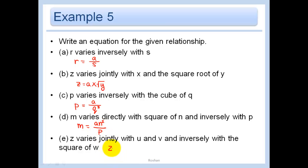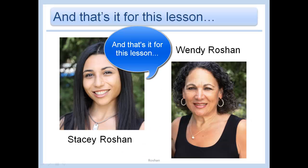Z varies jointly with U and V and inversely with the square of W. U and I. And that's it for this lesson. Bye!